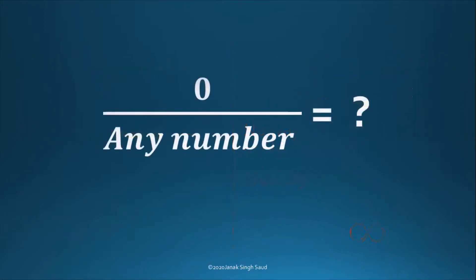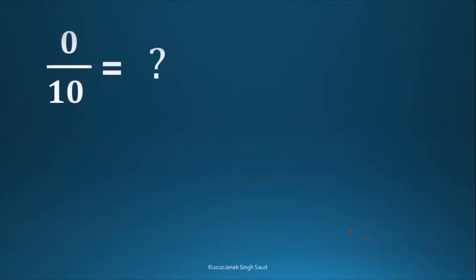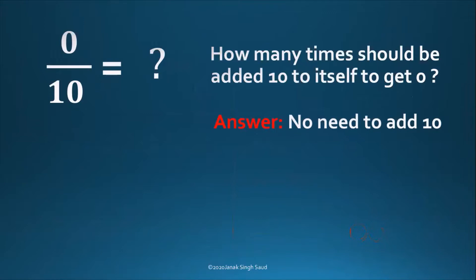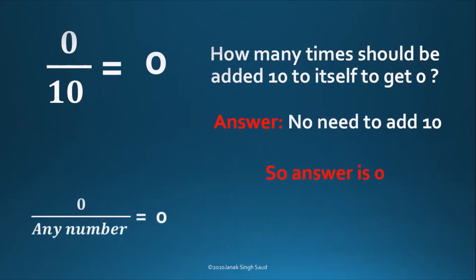We can say that any non-zero number divided by 0 is always equal to undefined. But what is 0 by 10? It means how many 10s should be added to itself to become 0, or how many 10s are required to make a 0? The answer is 0 because you don't need to add 10 to itself at all. So 0 by 10 is 0, and we can say that 0 divided by any number is always equal to 0.